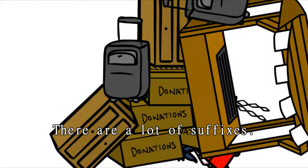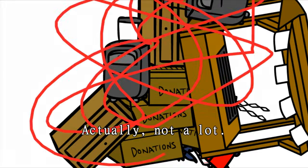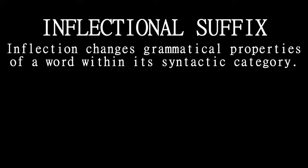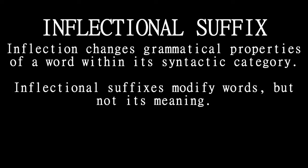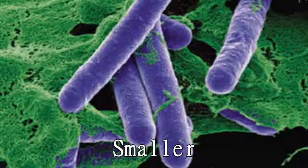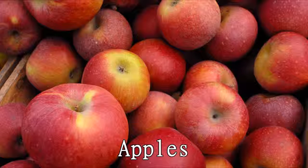There are two types of suffixes: inflectional and derivational. Inflection changes grammatical properties of a word within its syntactic category — inflectional suffixes modify words, but not their meaning. Examples are: played, waiting, fallen, smaller, biggest, doesn't, and apples.